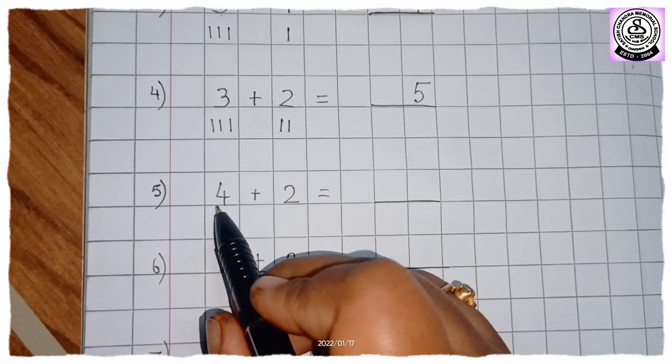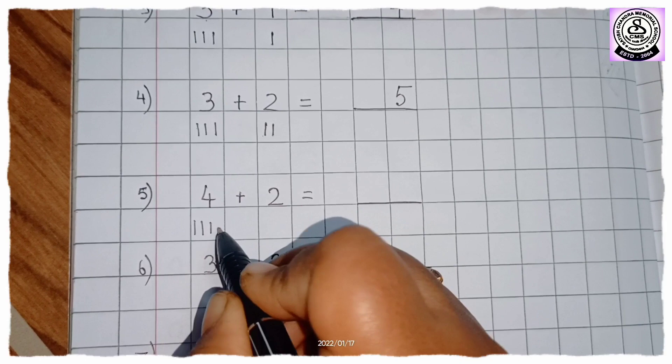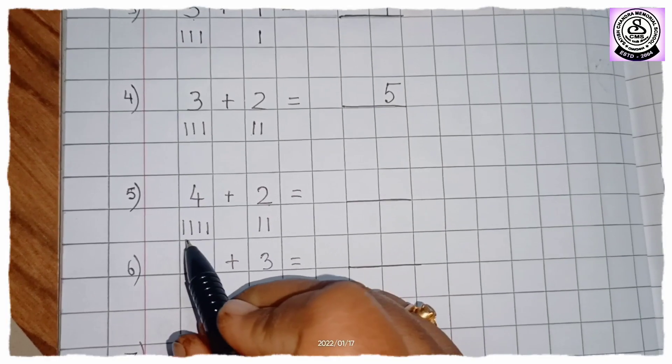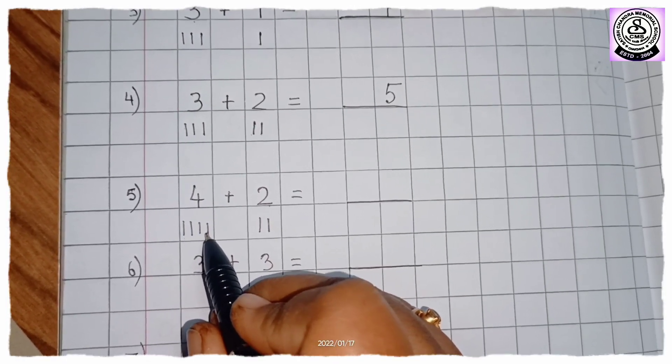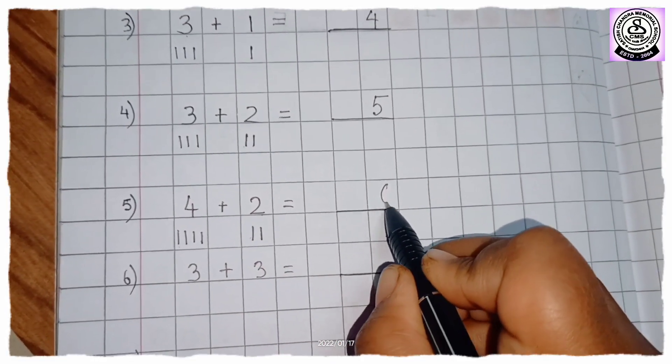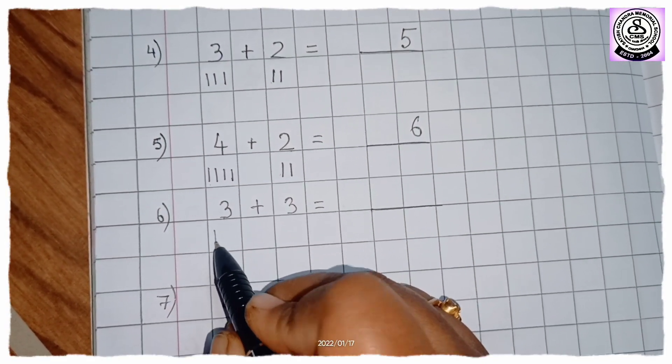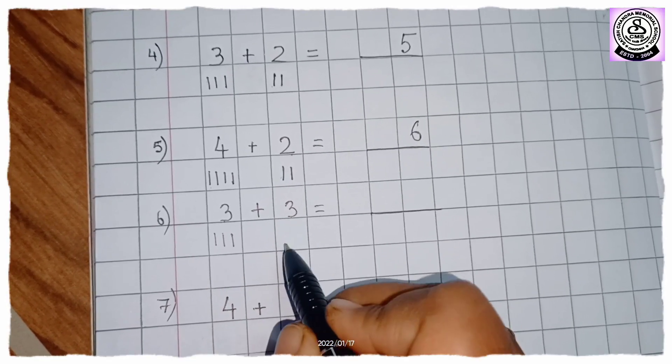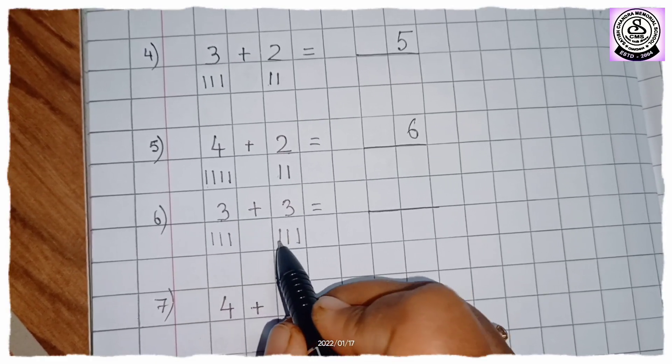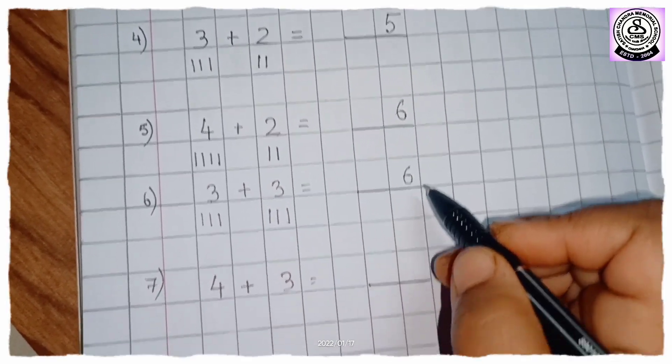Next question. So 4 plus 2. How many lines will we draw? 4. And here is 2. So 2 lines. So here we have 4, 5, 6. So 6. Now 3 plus 3. So we will draw here 3 lines. And here also 3 lines. So we already have here 3. 3, 4, 5, 6. So 6. We will write here 6.